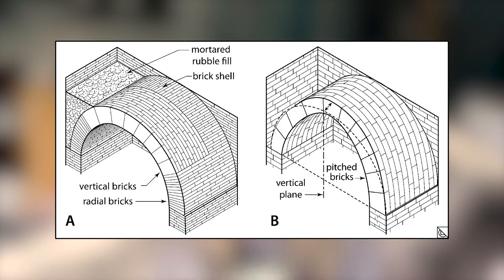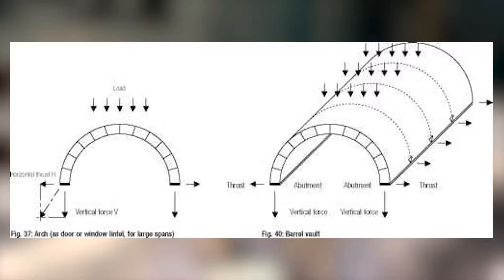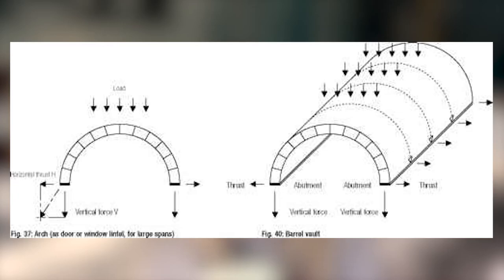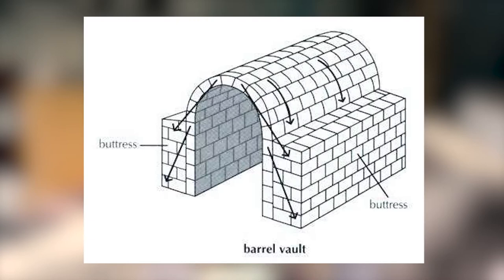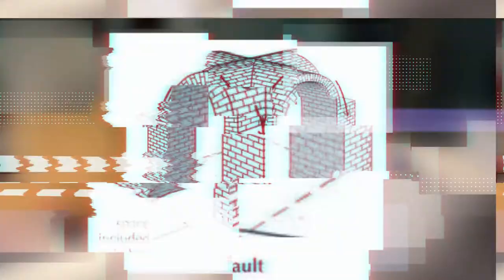There are many types of vaults. Barrel vaults were present in ancient Egypt and in the Middle East — the arches are deep enough to cover a significant amount of space. Interestingly, vaults redirect applied loads in the same way arches do. Vaults must be buttressed along their entire length with heavy walls to support and redirect those applied loads.